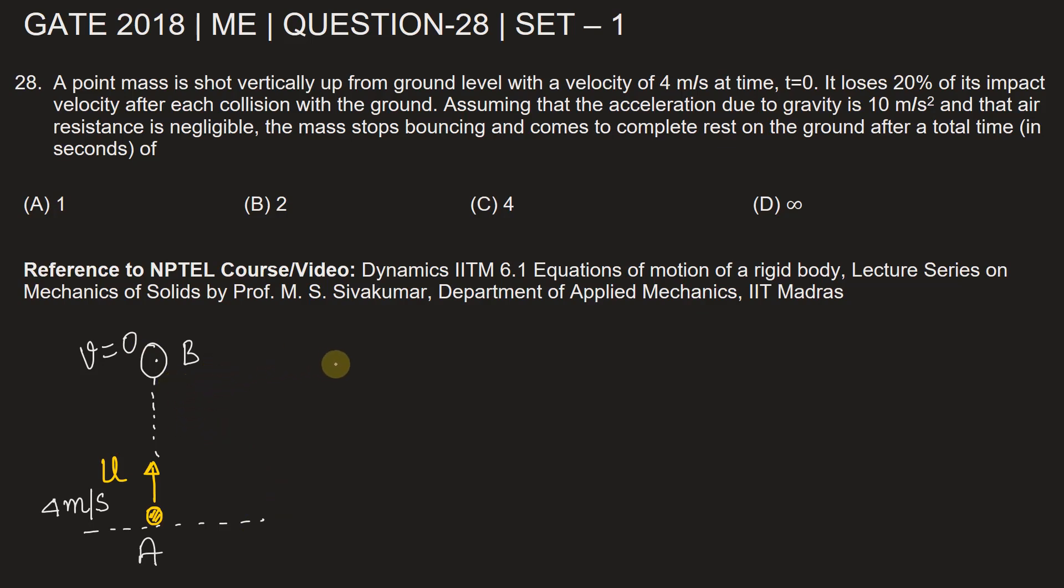So when now let's draw a separate diagram for that, the ball when it starts to fall back. Now when the ball hits the ground, what happens is its rebound velocity is decreased by 20%. That means its rebound velocity will be 0.8 times the previous velocity.